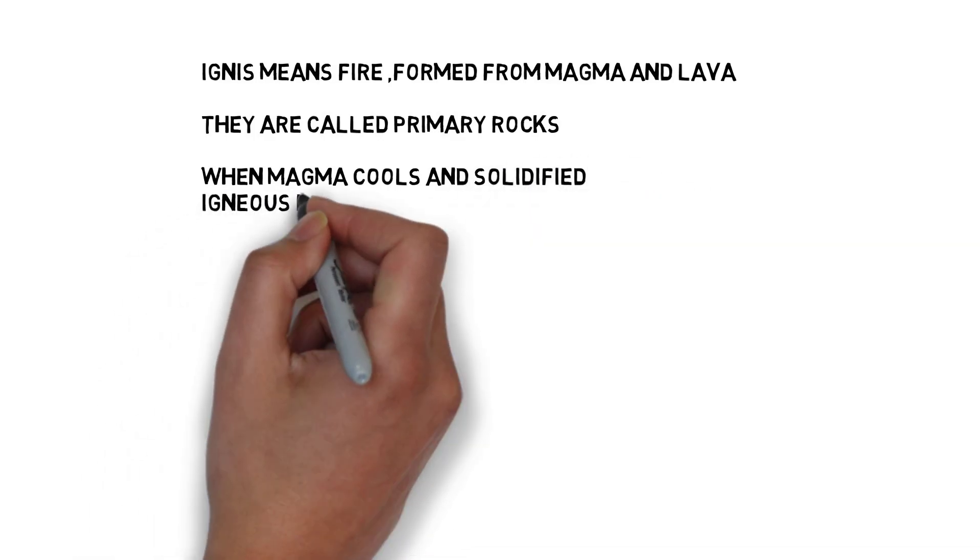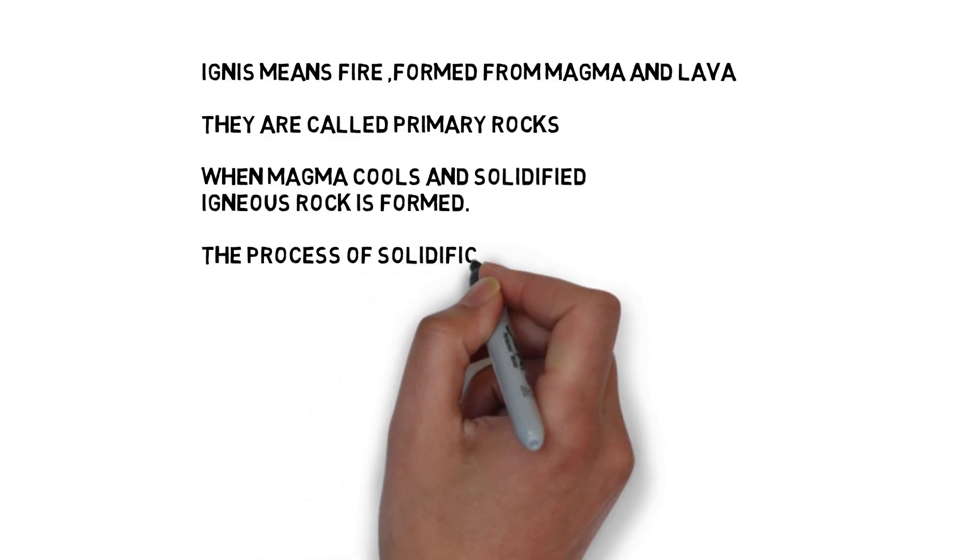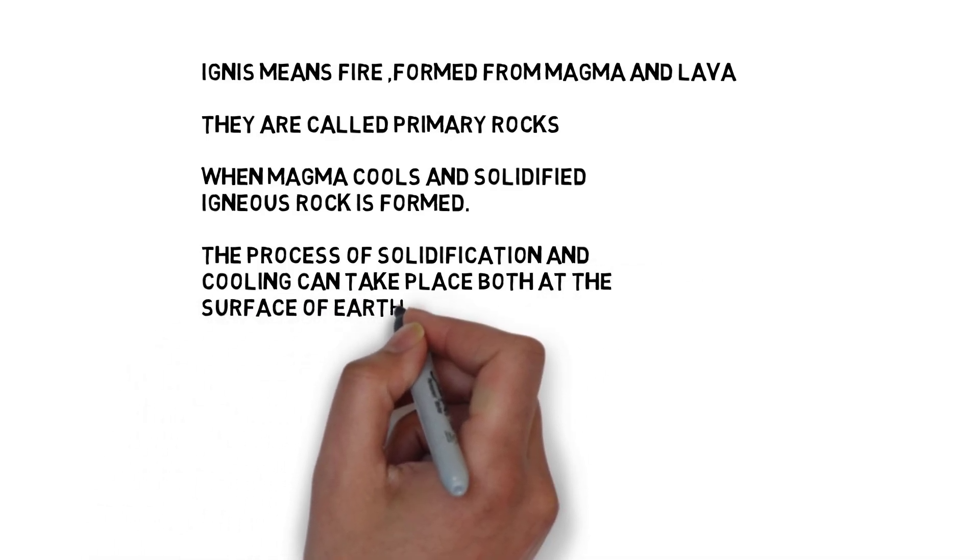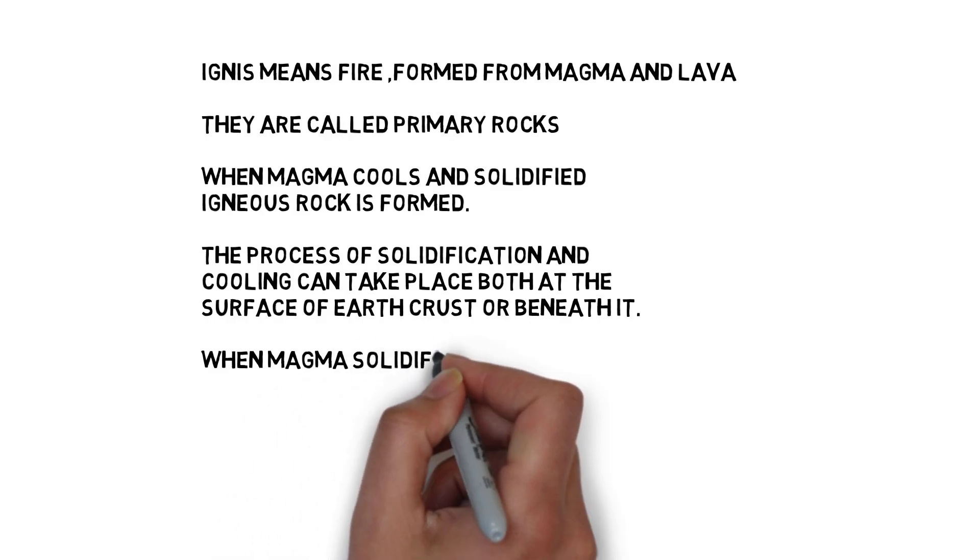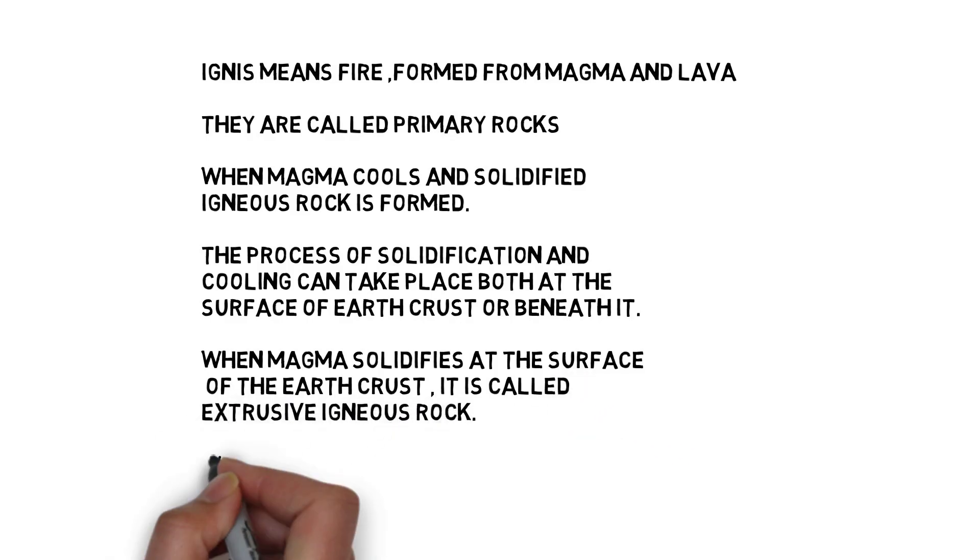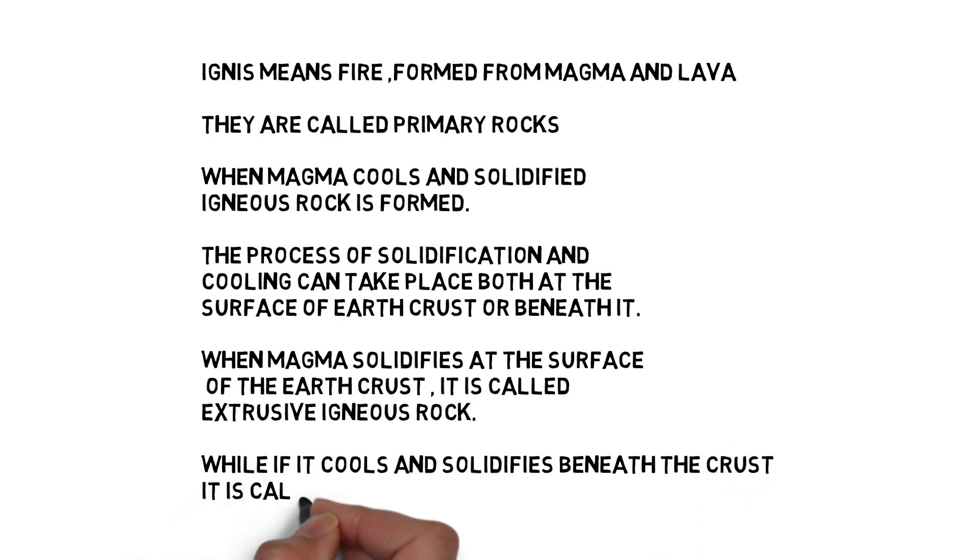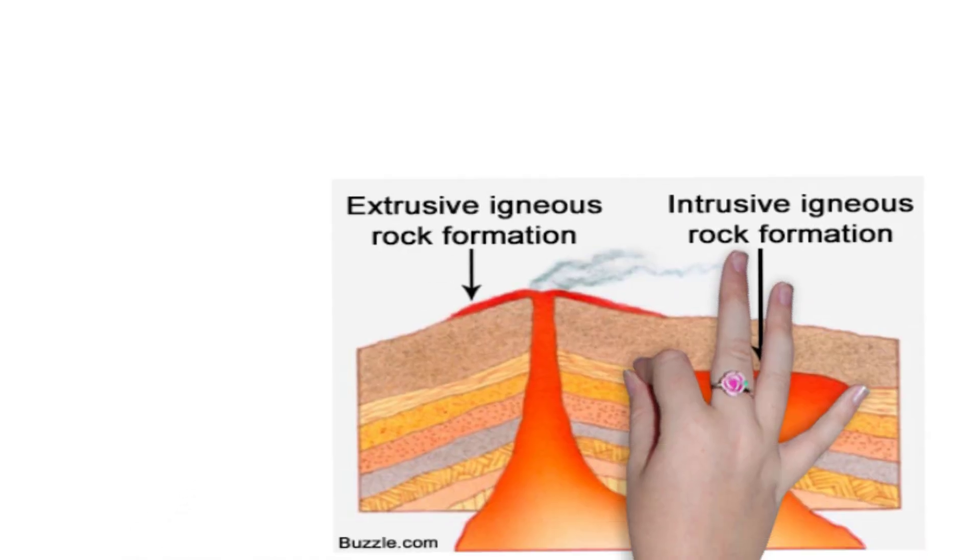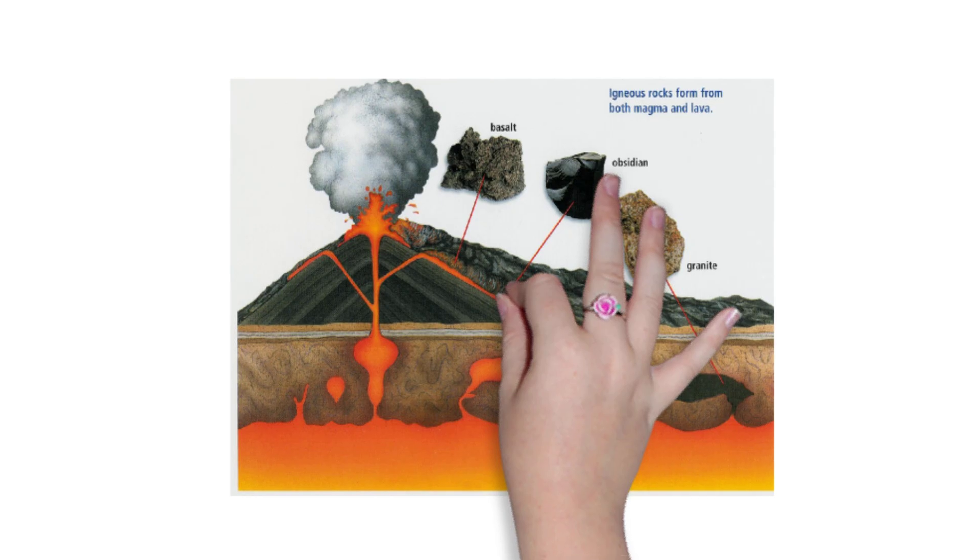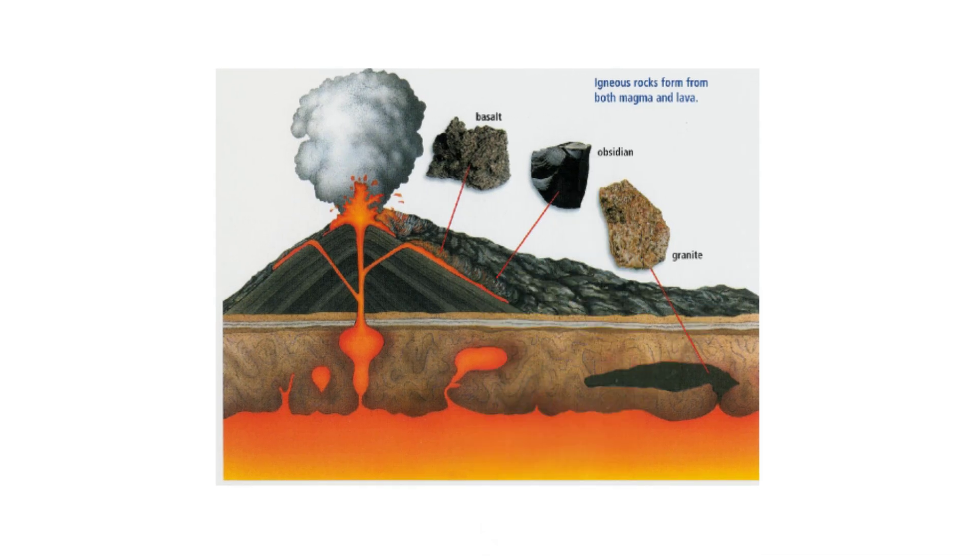When magma cools and solidifies, igneous rock is formed. This process of solidification and cooling can take place both at the surface of earth crust or beneath it. When magma solidifies at the surface of the earth crust, it is called extrusive igneous rock, while if it cools and solidifies beneath the crust, it is called intrusive igneous rock. In this figure we can see that magma coming out of a vent at the surface of the earth solidifies and forms extrusive igneous rock, while the magma which does not vent out from any opening solidifies beneath the earth crust and forms intrusive igneous rock.